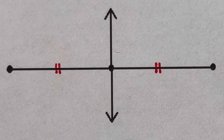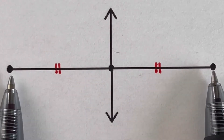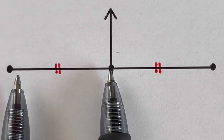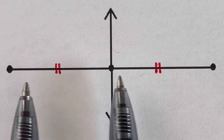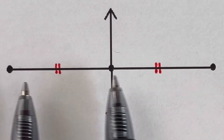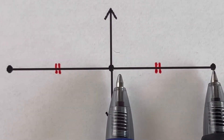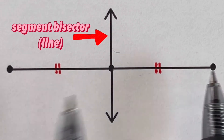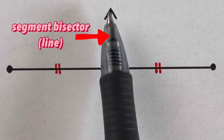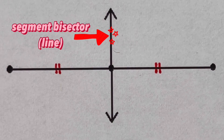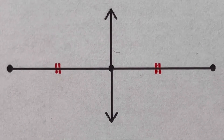In this picture, the line segment was again cut into two pieces. The tick marks tell us that both pieces are equal, and in this case it was cut by a line. So a line is another example of a segment bisector.